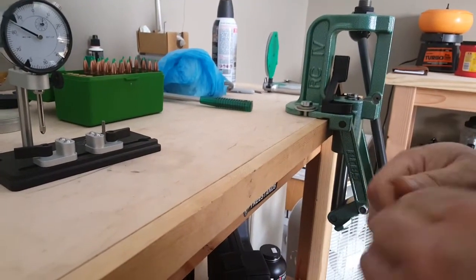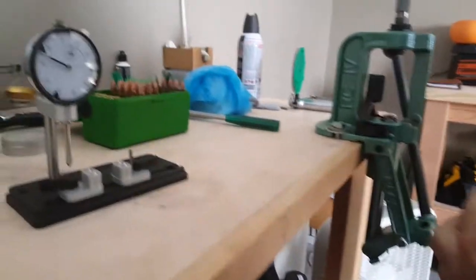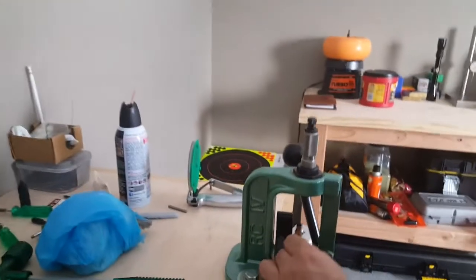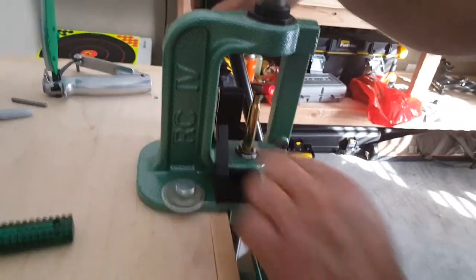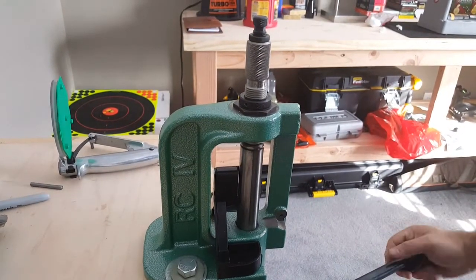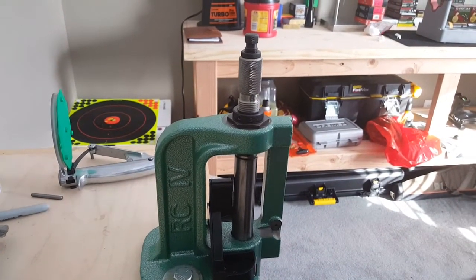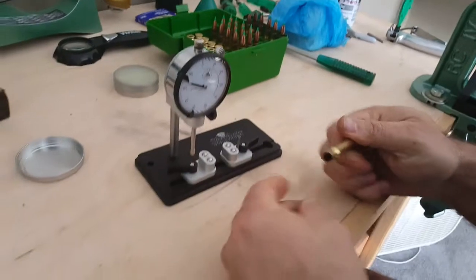Applying imperial wax. I'm going to run it up in my full-length resize die. I like to pull down just a smidge, primer out. Now let's check runout. Wipe the neck off.